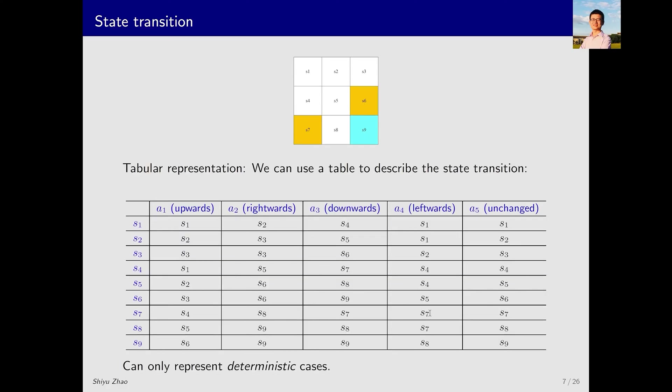State transitions can be represented in a table, where each row corresponds to a specific state, and each column corresponds to a particular action. For instance, if I am in state S1 and take action A1, which means moving upwards, I would bounce back and the next state would be S1 again. This table defines every possible state action pair. Although it is intuitive, it has limitations. That is because it can only represent deterministic cases where the outcomes of actions are certain. For example, if I am in S1 and take action A1, I might end up in S1, but there's also a possibility of bouncing to S4 or even S7, indicating multiple potential outcomes that this table cannot express.